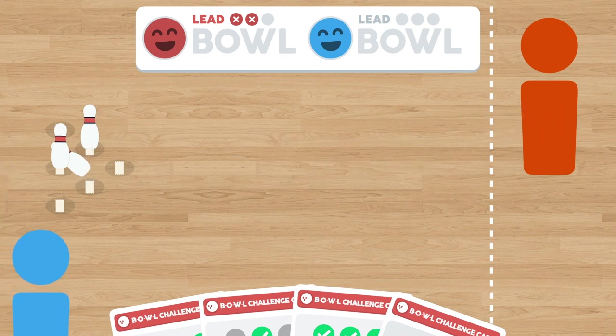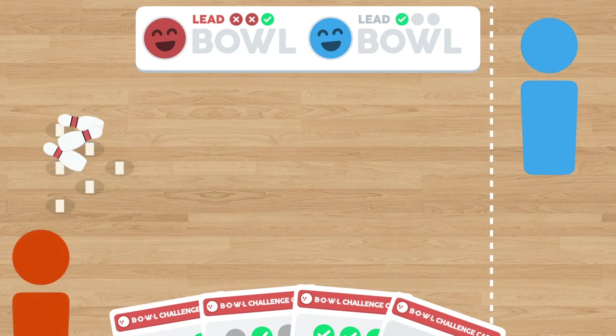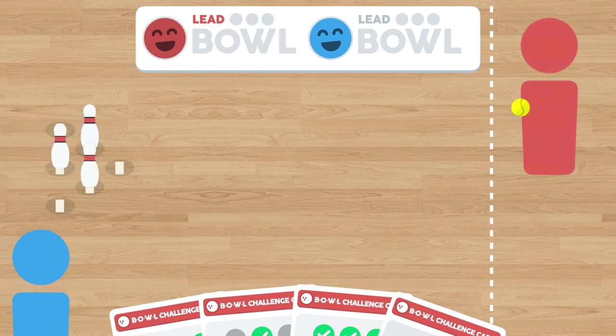If the lead bowler successfully knocks over all of the pins, their opponent now has three attempts to do the same shot. If they do so, the lead bowler picks a new card and the players go back and forth through this process. However,